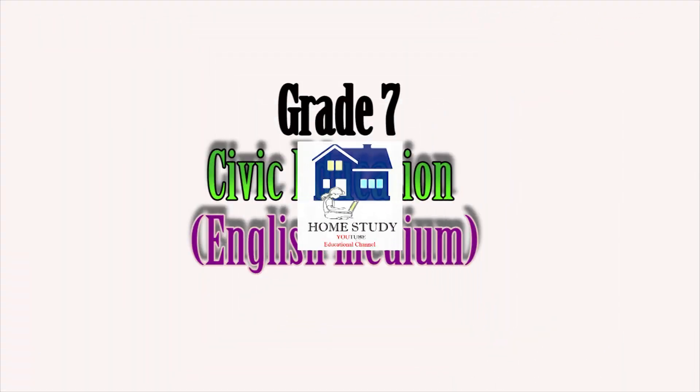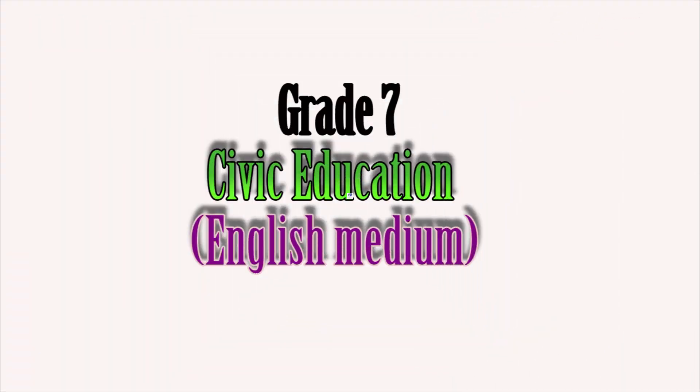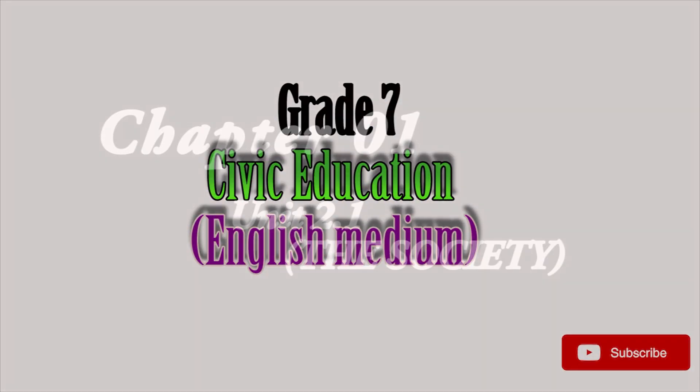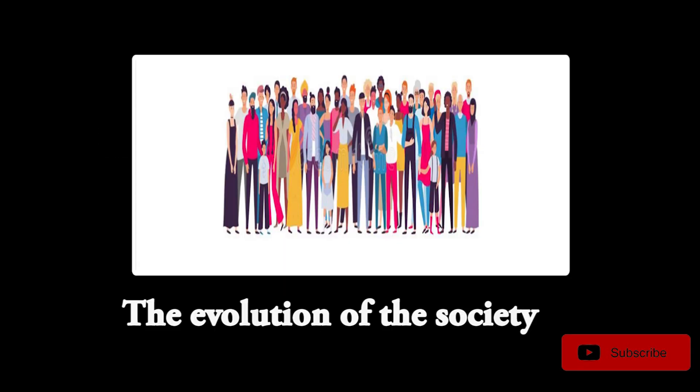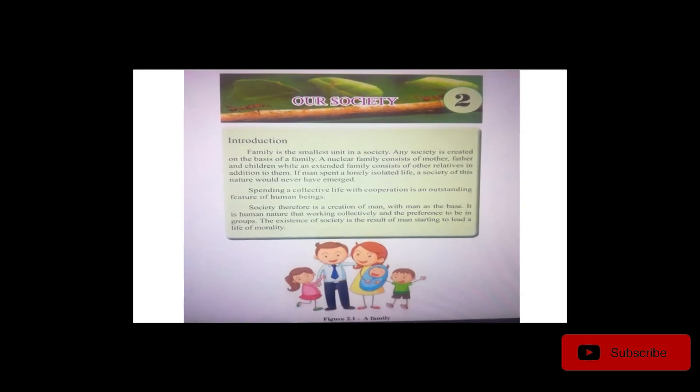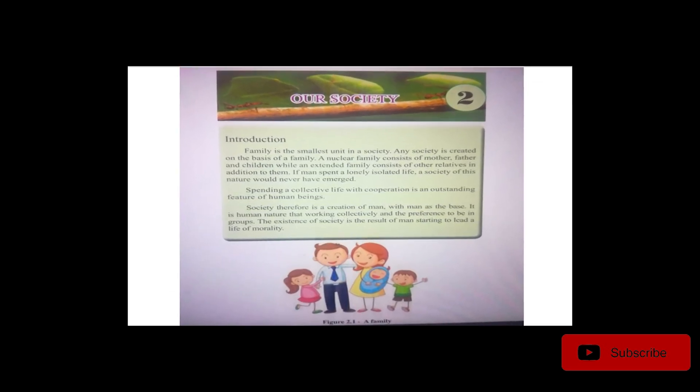Welcome to Home Study Educational Channel. Grade 7 Civic Education, Chapter 1: The Society — The Evolution of the Society from Simple to Complex. We hope to discuss how the society evolved from simple to complex present society.